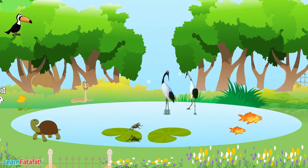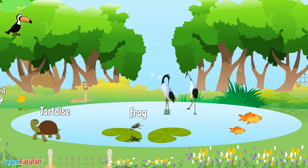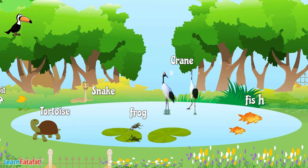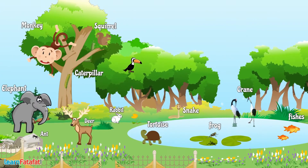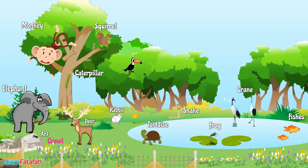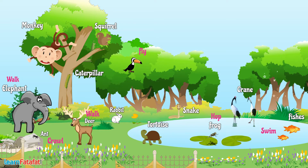Now look — here are frogs, tortoise, snake, crane, and fishes. Students, have you noticed that some animals can crawl, some can hop, some can swim, some can walk, and some can fly. Some animals have a tail, some have a trunk, some have hairs, and